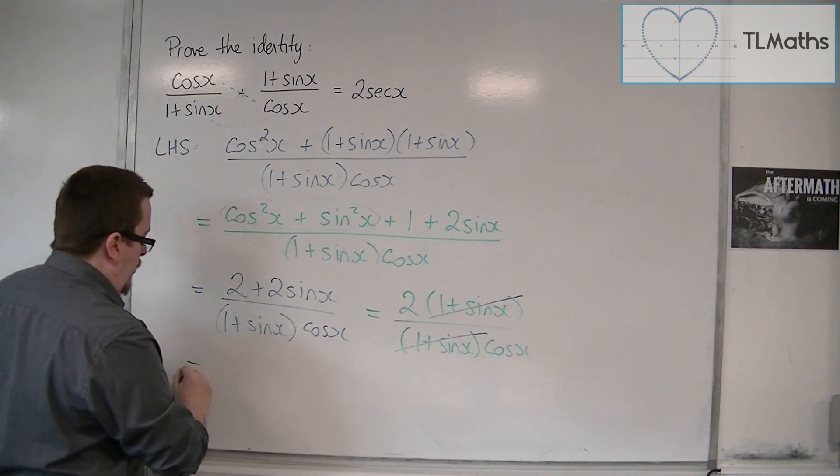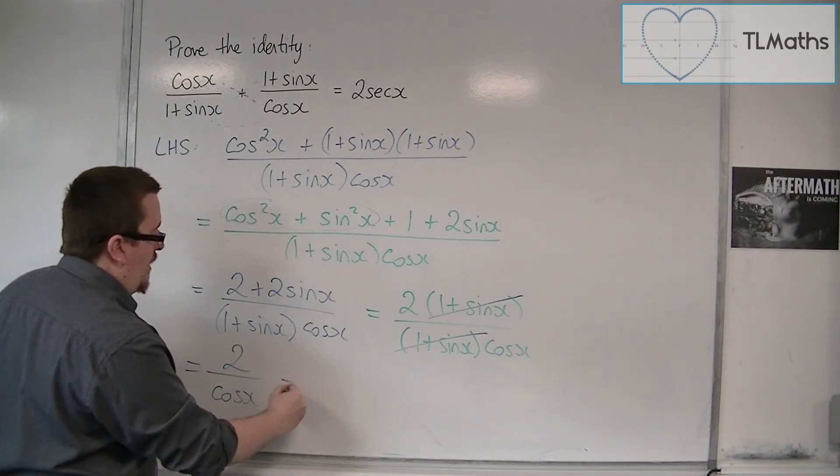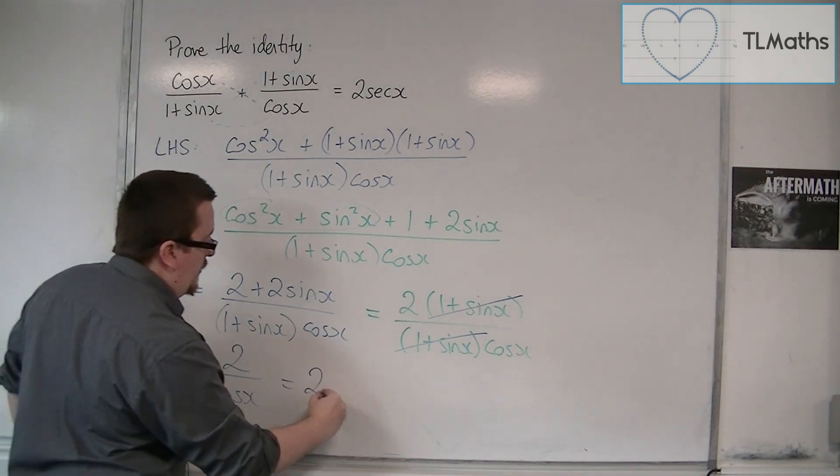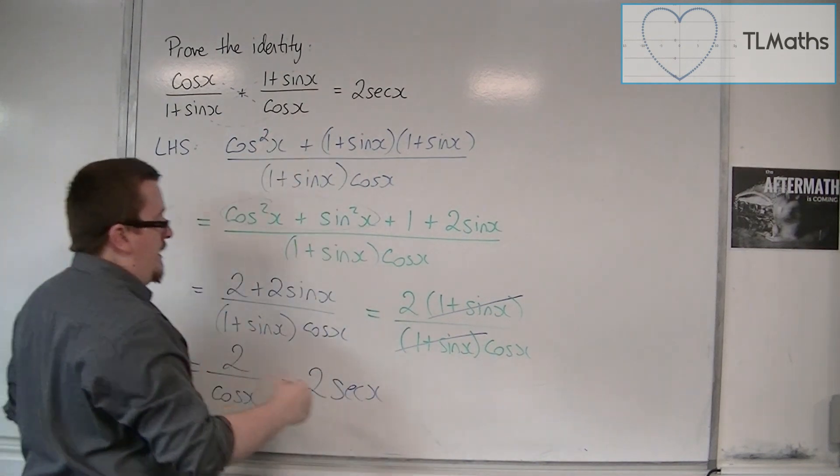And I'm going to be left with 2 over cos x. Now, 1 over cos x is sec x, so 2 over cos x is 2 sec x. And that is the right-hand side.